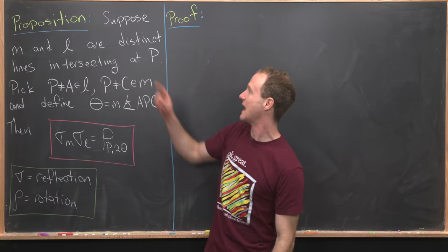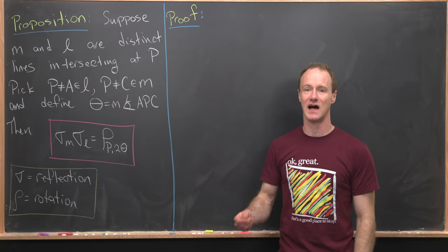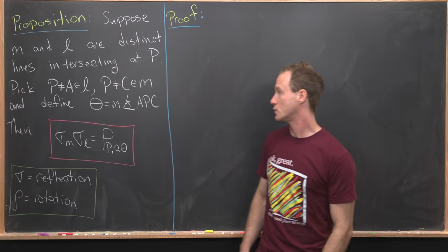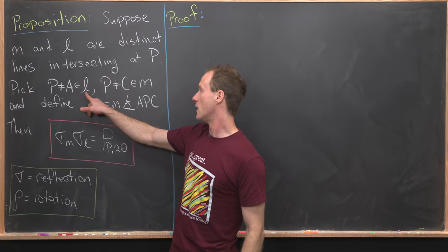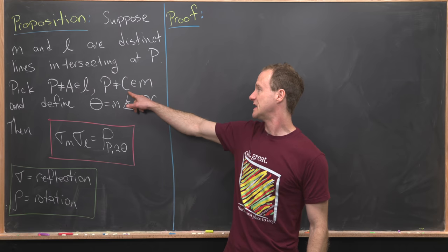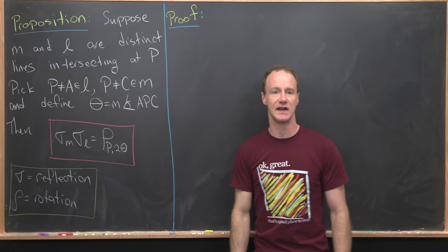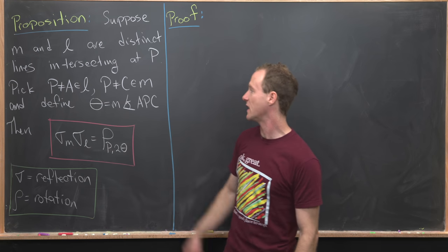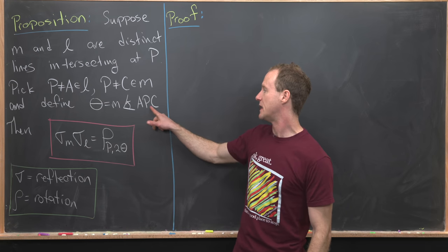We want to suppose that M and L are distinct lines intersecting at a point P. Next, we will pick A on the line L, which is not equal to P, and C on the line M, which is not equal to P, and define the angle theta to be the angle measure of APC.